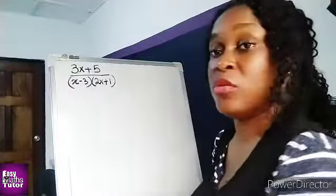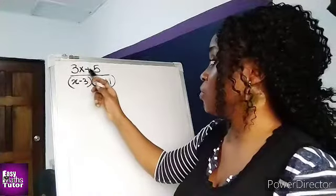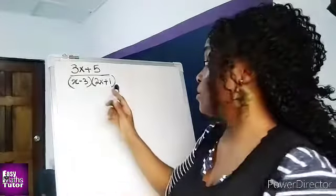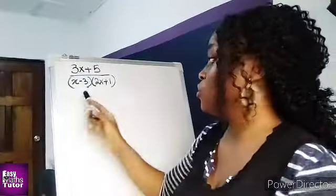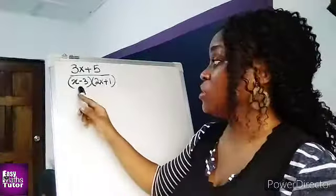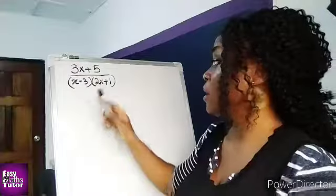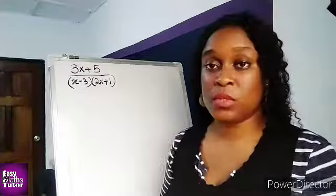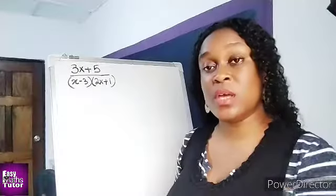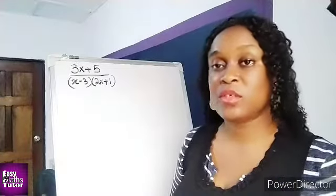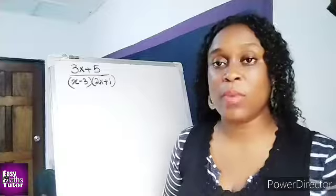We have in the numerator 3x plus 5, and in the denominator it has already been resolved to two parts: x minus 3, and 2x plus 1. So if we are going to resolve this to the individual partial fractions, this is how we're going to go about it.